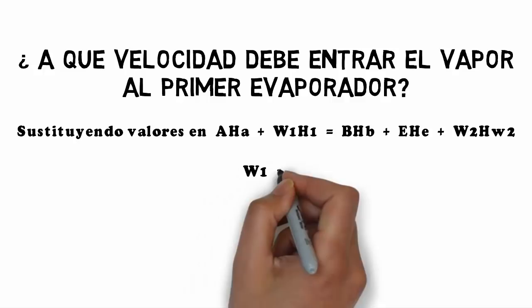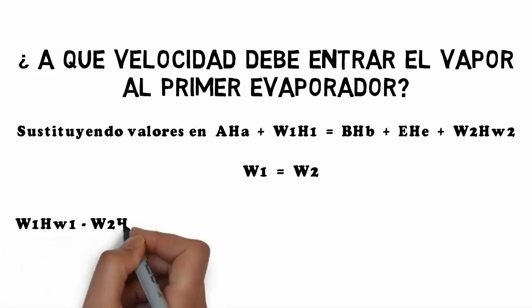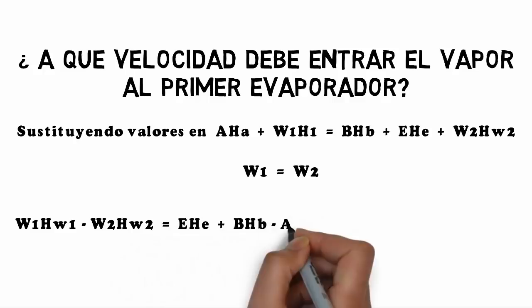Since W1 equals W2, we move all W terms to the same side of the equation, as shown. The equation then becomes: W1·ΔhW1 − W2·ΔhW2.